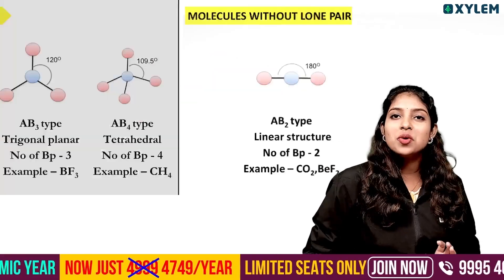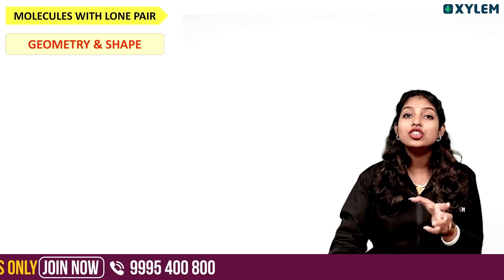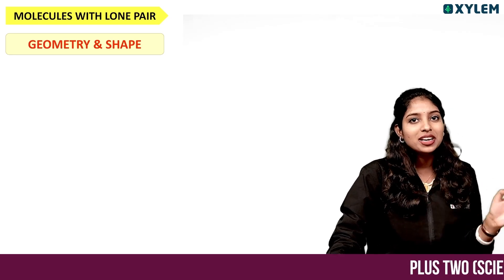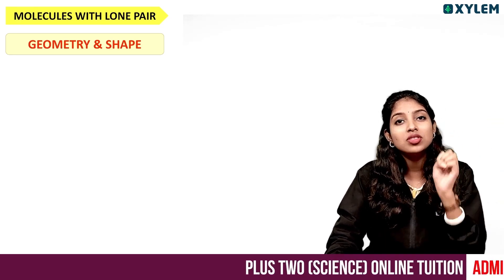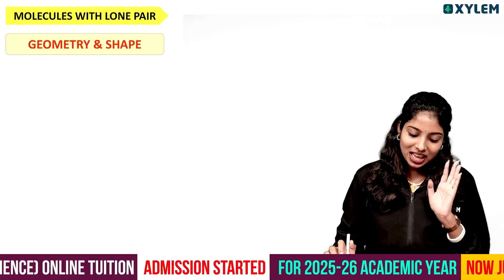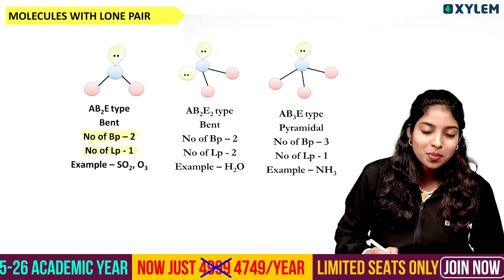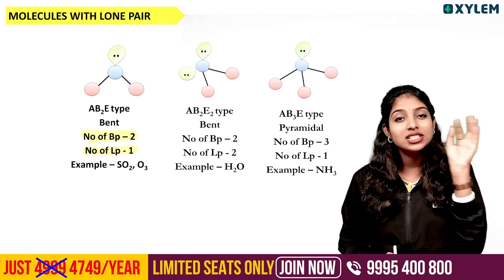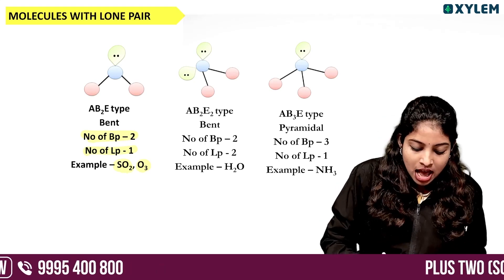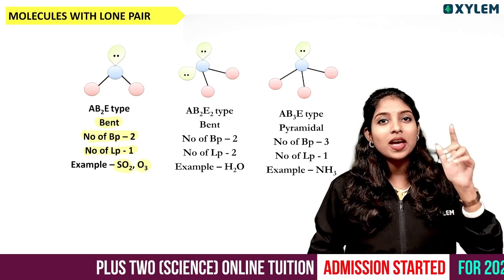These are the molecules without lone pairs. Now for molecules with lone pairs: with 2 bond pairs and 1 lone pair, the shape is bent — examples include ozone and SO2.